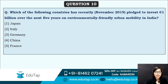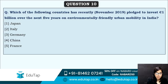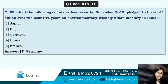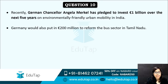Next: which of the following countries has recently pledged to invest 1 billion over the next five years on environmentally friendly urban mobility in India? You can take the hint from the currency Euro. The correct answer is option three — Germany. German Chancellor Angela Merkel visited India and pledged to invest 1 billion euros over the next five years.